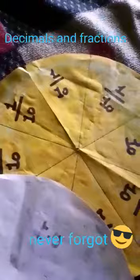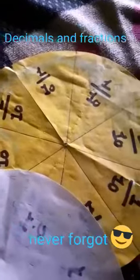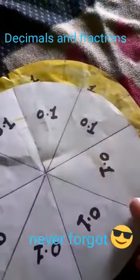On one circle I write 1/10, 1/10 in all the parts. And on the other circle I write 0.1, 0.1 in all the parts. You can see that. Now what I do...